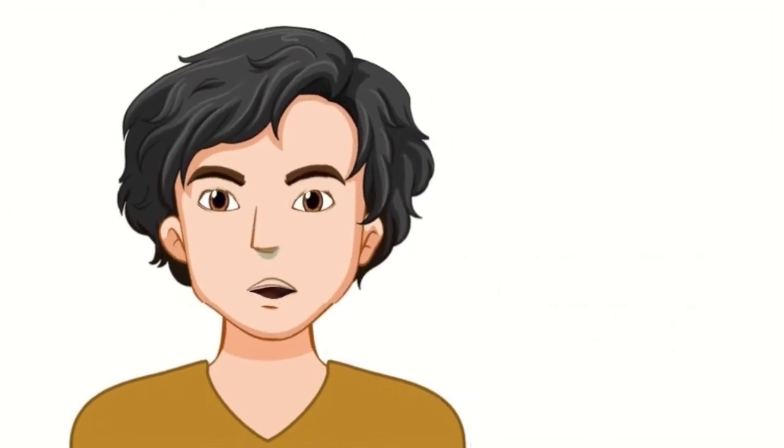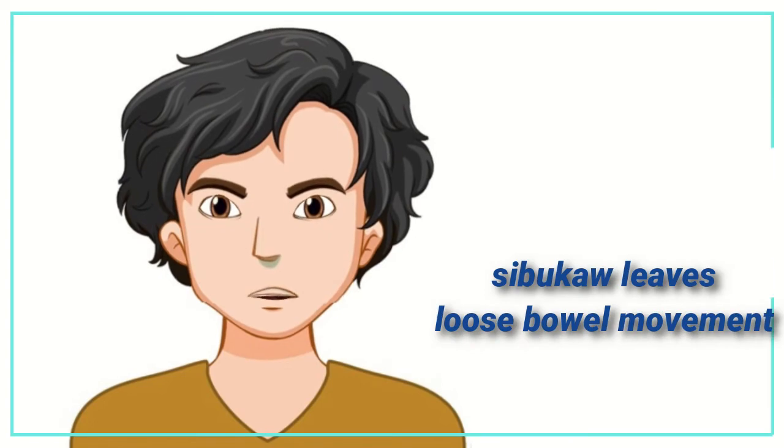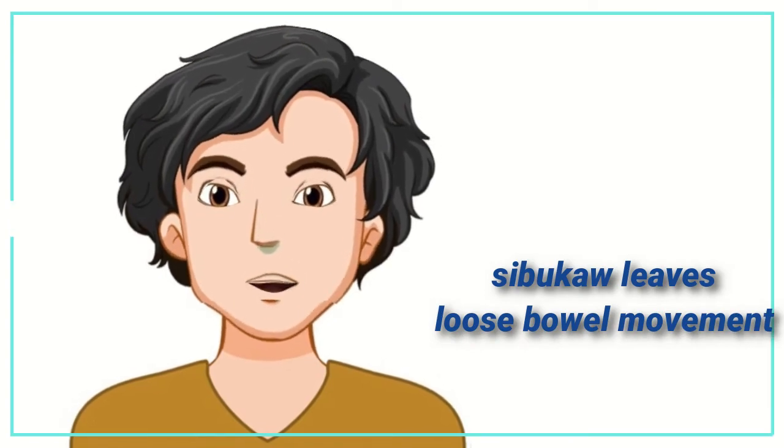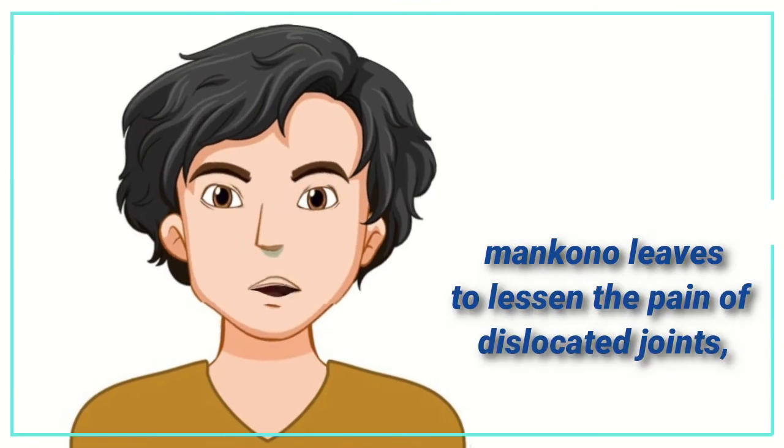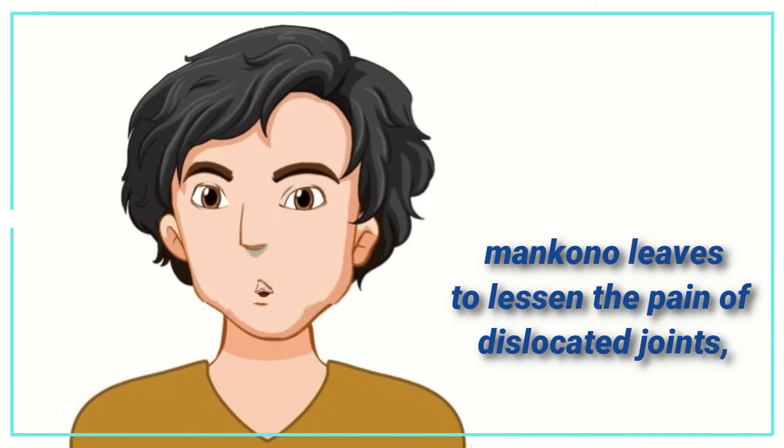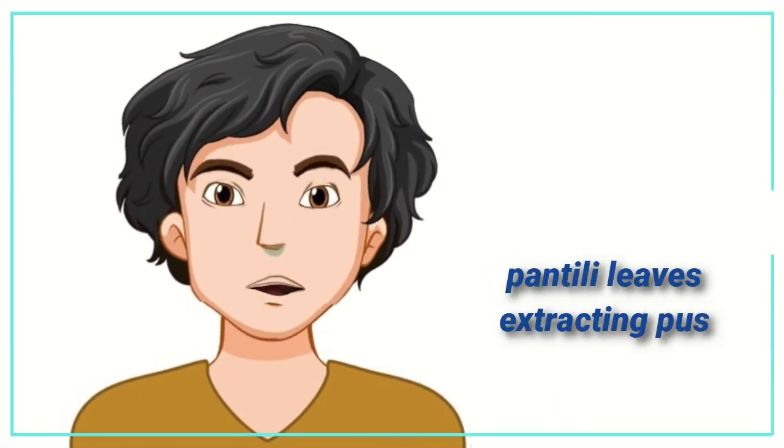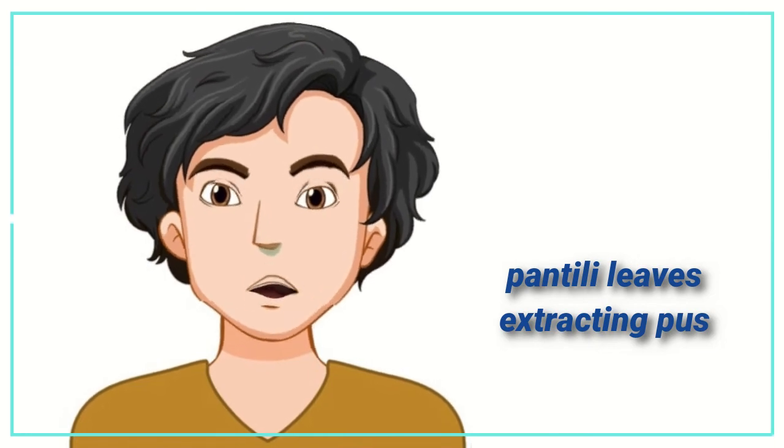Their traditional medicine include sibukaw leaves used to treat loose bowel movement, luya for rheumatism, mancano leaves to lessen the pain of dislocated joints, and pantili leaves for extracting pus.